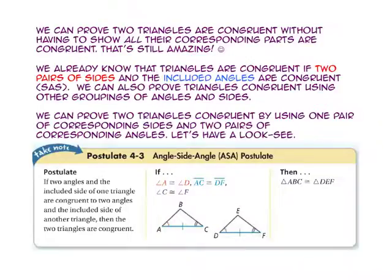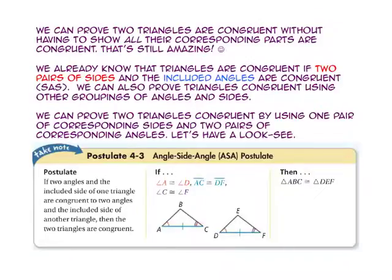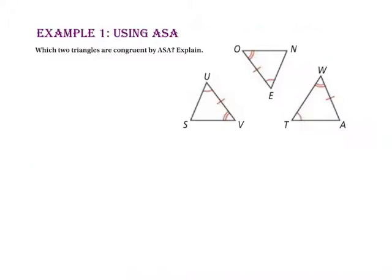Let's have a look at the angle-side-angle postulate. If two angles and the included side of one triangle are congruent to two angles and the included side of another triangle, then the two triangles are congruent. In this example, angle-A is congruent to angle-D, side-AC is congruent to side-DF, and angle-C is congruent to angle-F — angle-side-angle. Therefore, triangle-ABC is congruent to triangle-DEF by the angle-side-angle postulate.